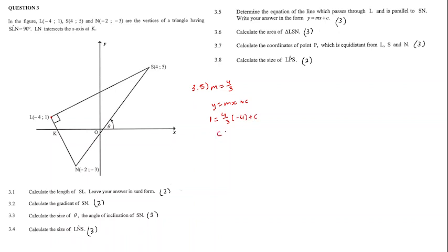If we rearrange and plug this into the calculator, we get C to equal 19 over 3. So, our equation is Y is equal to 4 over 3 X plus 19 over 3.